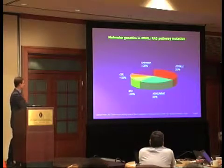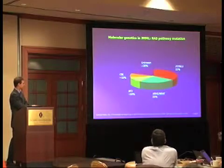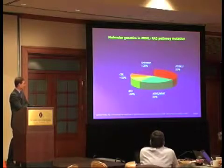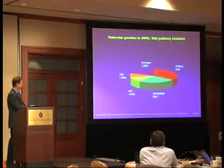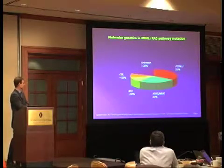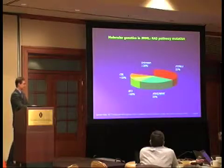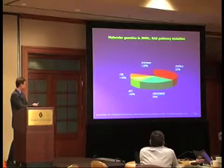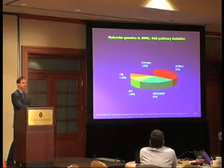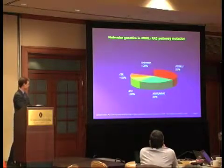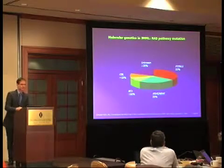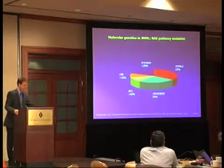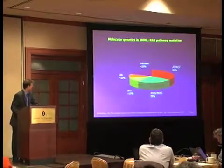This is the distribution of the mutational subgroups in JMML. We find a PTPN11 lesion in approximately one-third of patients, KRAS or NRAS in about 25%. Ten percent of children have the diagnosis of neurofibromatosis type 1. Approximately 10% of children have CBL lesions — a new discovery. If you add up those numbers, there are about 20% of children where the mutation is still unknown, but I'm confident we are going to find out in the future.